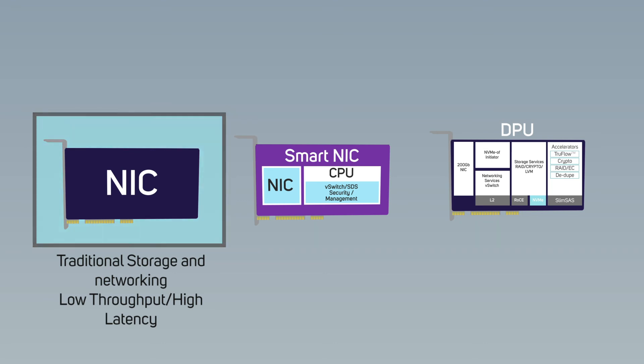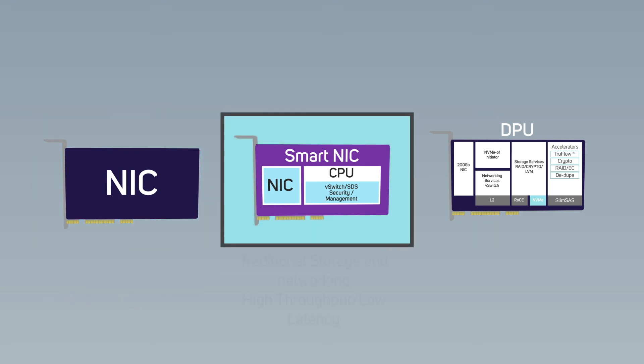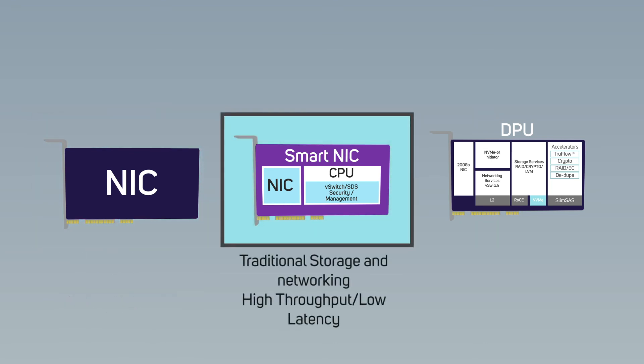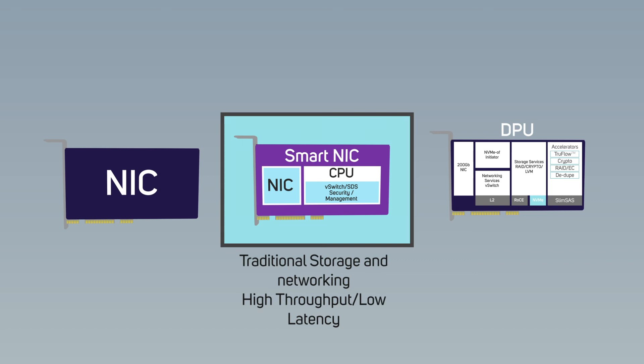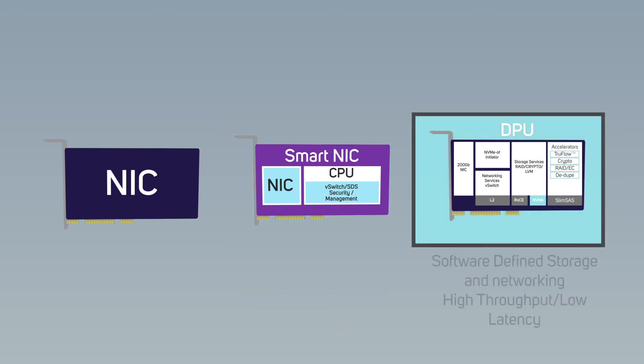If you've got demanding applications, offloading onto a smart NIC will deliver throughput and latency improvements. Only if software-defined processes that generate a management overhead are a key part of your infrastructure does a DPU come into play.